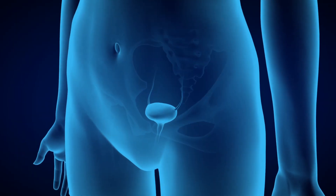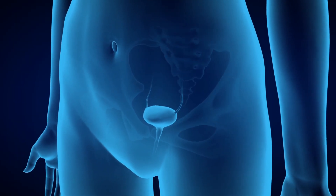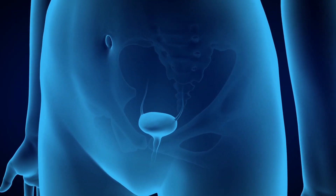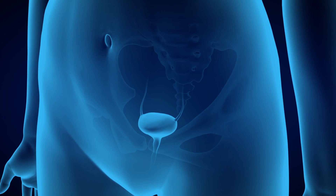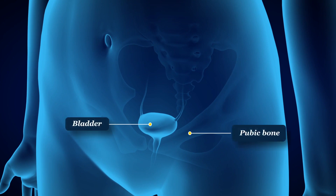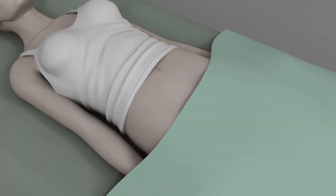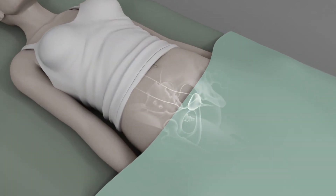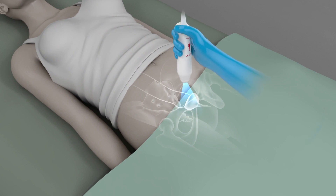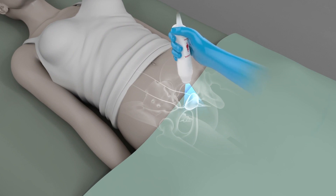A quick review of the human anatomy. Knowing the location of the pubic bone and bladder is important to avoid any pubic bone interference of the ultrasound beam. By placing the probe above the pubic bone and angling it towards the pelvis, this will give a clear view of the bladder.